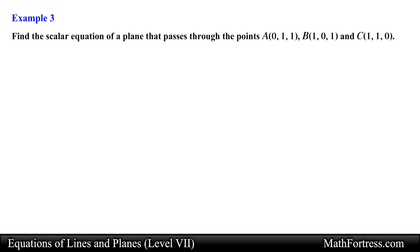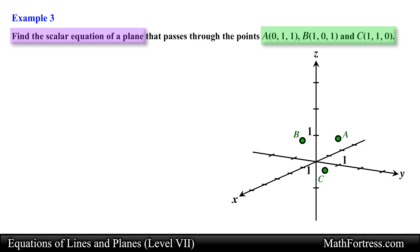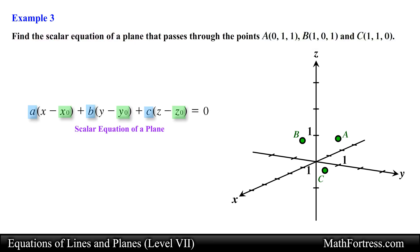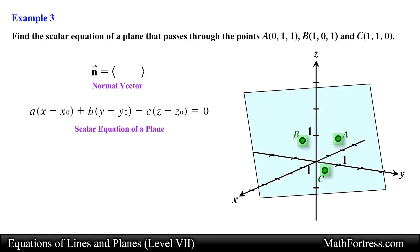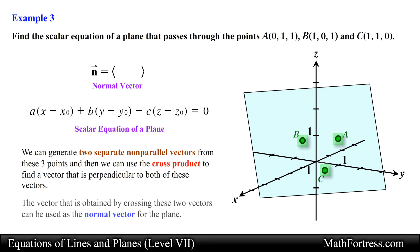Find the scalar equation of a plane that passes through points A, B, and C. In this problem we are given the coordinates of 3 points and are asked to determine the scalar equation of a plane that contains these 3 points. As usual we need a point and a vector normal to the plane. We already know 3 points on the plane, but we don't have a normal vector. Notice that we have 3 non-collinear points that define a plane in space. We can generate 2 separate non-parallel vectors from these 3 points, then use the cross product to find a vector perpendicular to both — which serves as the normal vector for the plane.